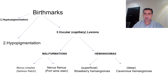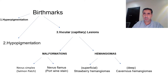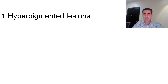Birthmarks can be divided into three parts: hyperpigmentation, hypopigmentation, and vascular or capillary lesions. Malformations present in two forms — identical in shape but different in site — nevus simplex or salmon patch, and nevus flammeus or port wine stain. Hemangiomas have two types: deep (cavernous hemangioma) or superficial (strawberry hemangioma).